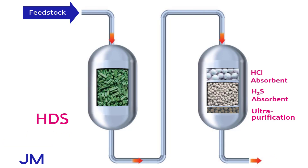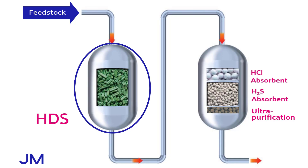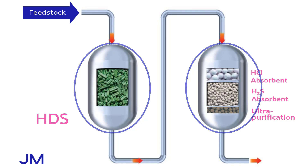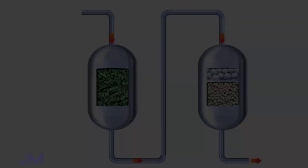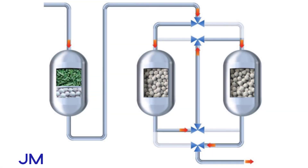Here is an example of what a typical flowsheet might look like. The first vessel contains the HDS catalyst followed by the chloride and sulfur removal absorbents. Alternatively, a lead-lag configuration can be utilized.